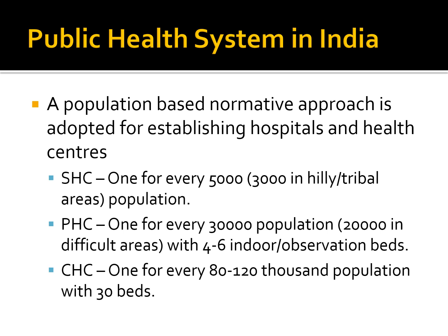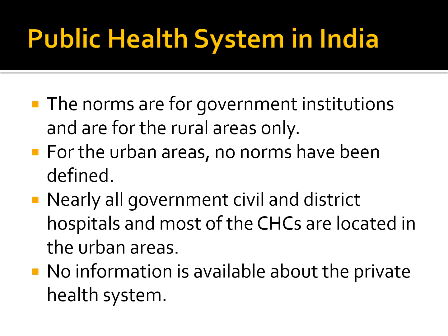A population-based normative approach was adopted for establishing hospitals and health centers. There should be one health center for every 5,000 population, one primary health center for every 30,000 population, and one central health center for every 80,000 to 120,000 population with 30 beds. These norms are for government institutions in urban areas only. For rural areas, no norms have been defined. Nearly all government civil and district hospitals and most CHCs are located in urban areas, and no information is available about the private health system.